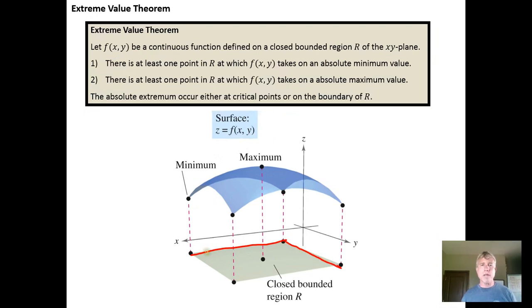And as long as we have a closed bounded region over which the function is everywhere continuous, then we're guaranteed that the function is going to have an absolute smallest and an absolute largest value over that closed region.